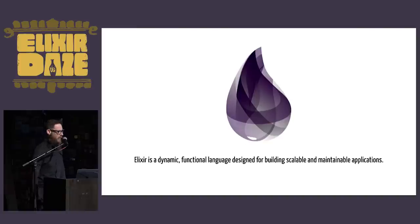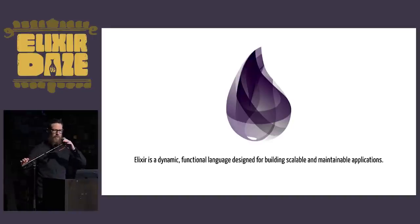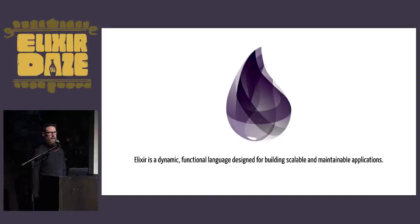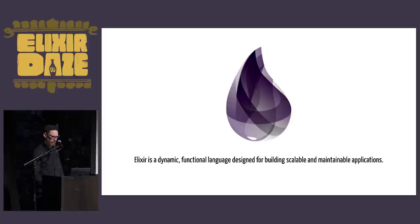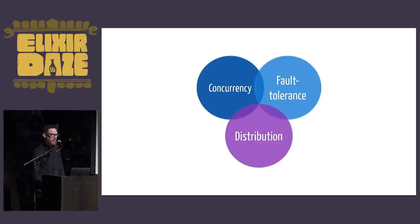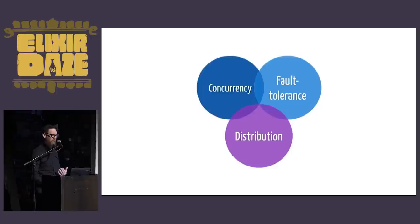This talk is about Elixir. As we all know and love, Elixir is a dynamic functional programming language. It's built for scalability and all that good stuff. It's known for this trinity of features: concurrency, fault tolerance, and distribution — built on top of this rock-solid awesome thing.